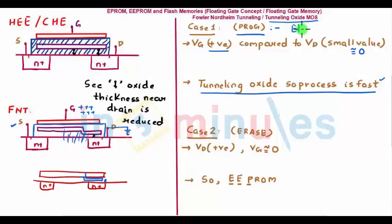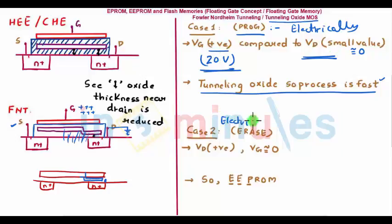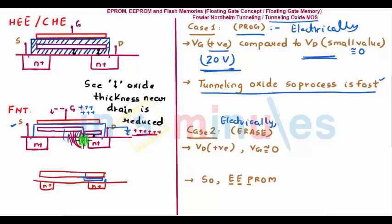For Case 2 — erasing — since this memory is electrically programmable (programmed by applying a high voltage at the gate and a low voltage at the drain), erasing is done by the exact opposite: the gate voltage is set to zero and a very high voltage is applied at the drain. The electrons trapped on the floating gate are then attracted by the electric field toward the drain side. Because the tunneling oxide is very thin and a high voltage is present at the drain, the electrons tunnel back through the oxide and return to the semiconductor, erasing the stored charge.